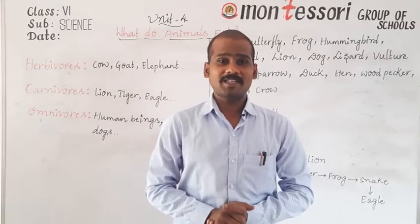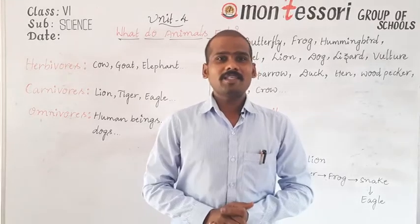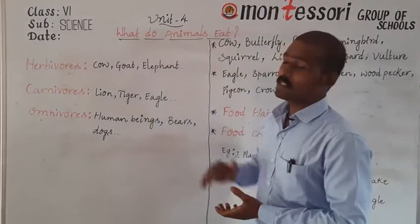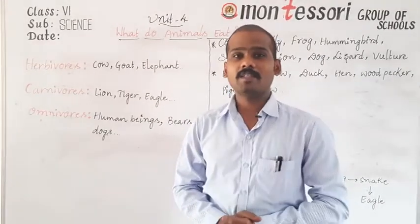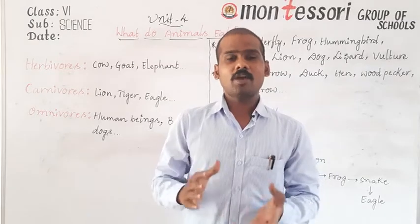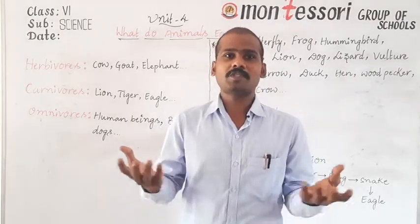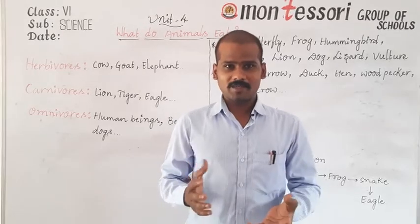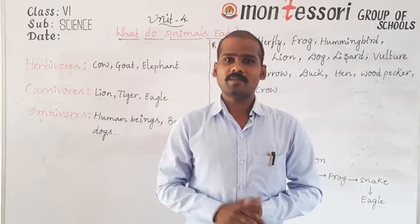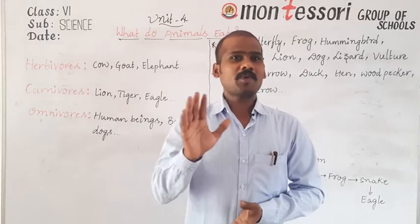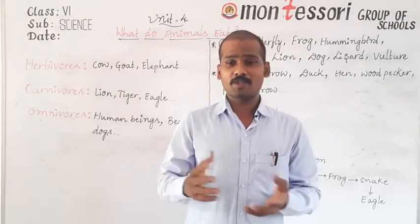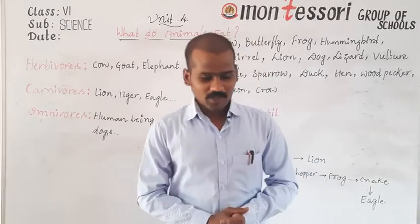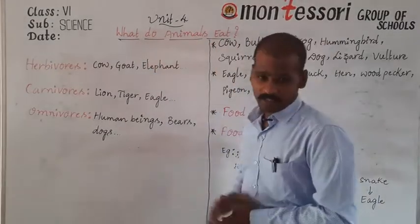Hi students, welcome back to General Science Class 6. Today in this class we're going to discuss the fourth chapter of General Science Class 6, which is 'What Do Animals Eat.' Without wasting any time, let's get started. Before we begin, if you have a notebook and a pen, that would be great — otherwise, pause the video and grab them to note down all the points.